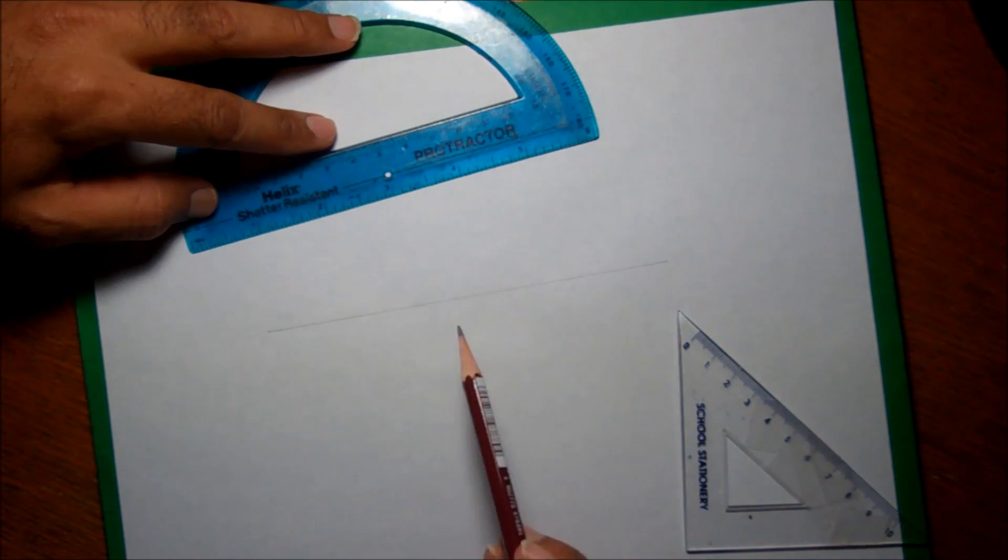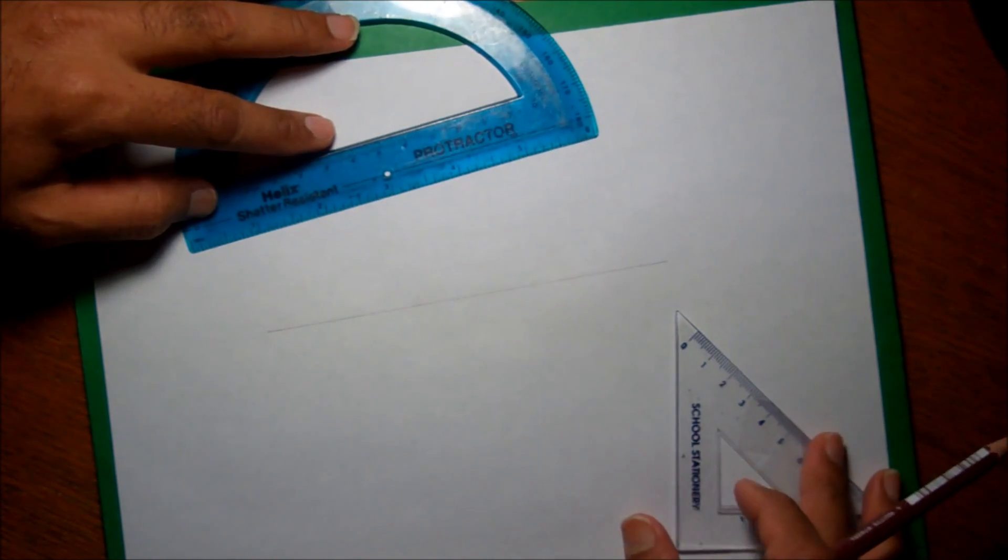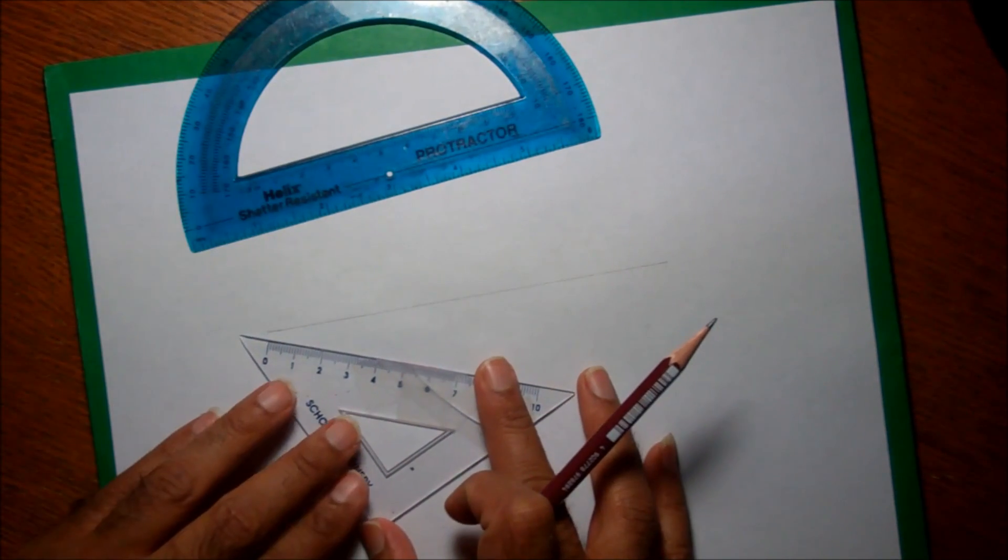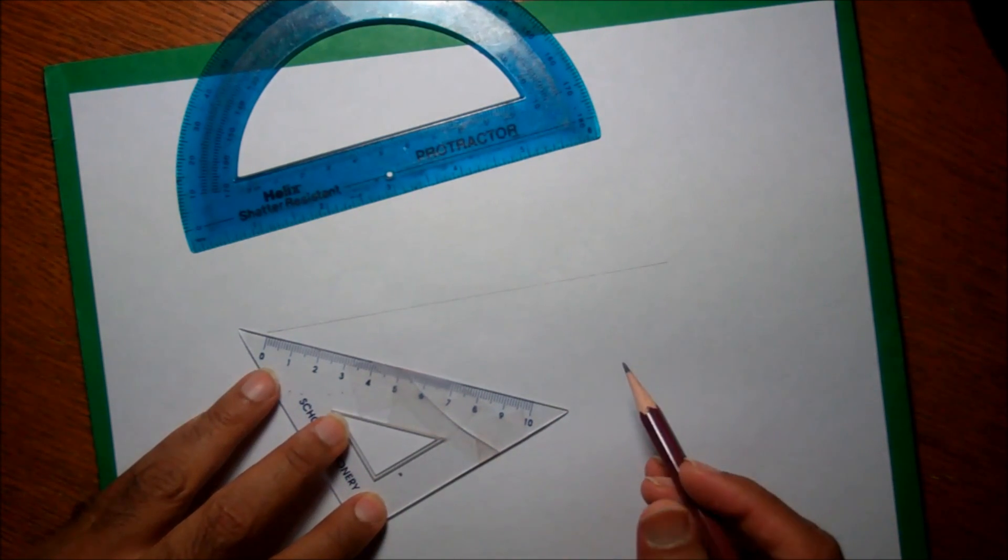Another easy method for engineering is this: what you do is, let's say I want to divide into 10 equal parts, so I'm going to draw the underline here of 10 centimeters.